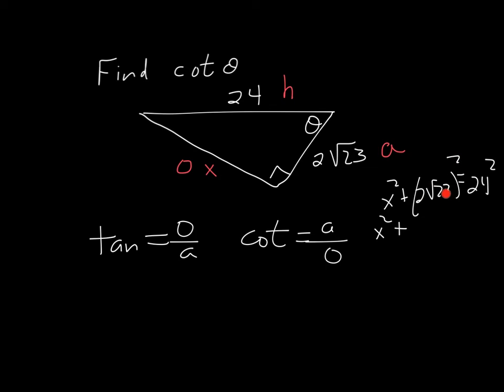That's x squared plus, so now we have 2 squared and square root of 23 squared. Well, 2 squared is 4, and square root of 23 squared cancels each other out to make 23. So this is actually 4 times 23, which is 92.